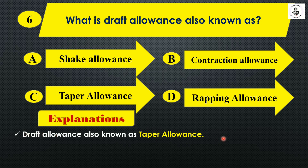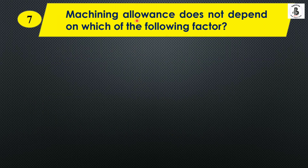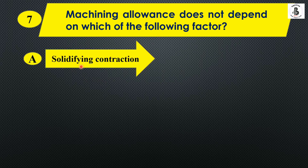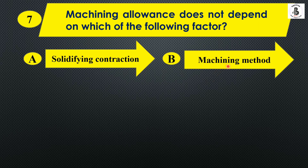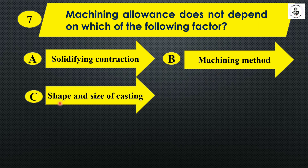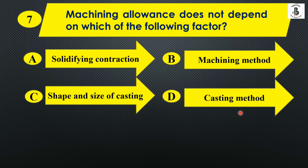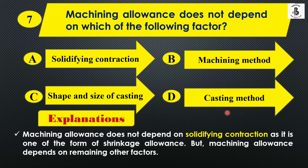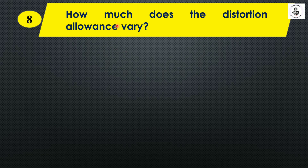Question seven: Machining allowance does not depend on which of the following factors? Option A: Solidifying contraction, Option B: Machining method, Option C: Shape and size of castings, Option D: Casting material. Machining allowance does not depend on solidifying contraction, as that is a form of shrinkage allowance. Machining allowance depends on all the other remaining factors. The right answer is Option A: Solidifying contraction.